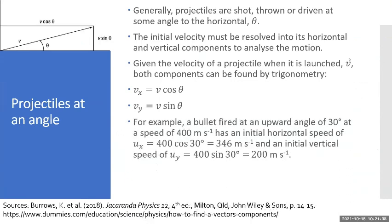For example, a bullet fired at an upward angle of 30 degrees, and that means 30 degrees to the horizontal, at a speed of 400 meters per second has an initial horizontal speed of vx = 400 cos 30, which equals 346 meters per second, and an initial vertical speed of uy = 400 sin 30, which is 200 meters per second.